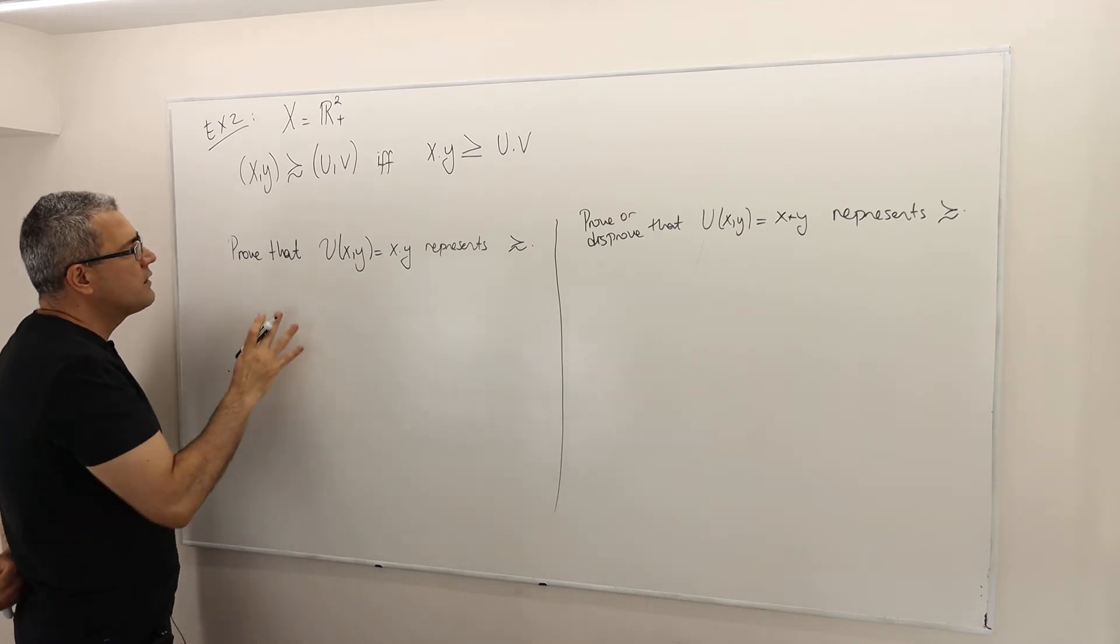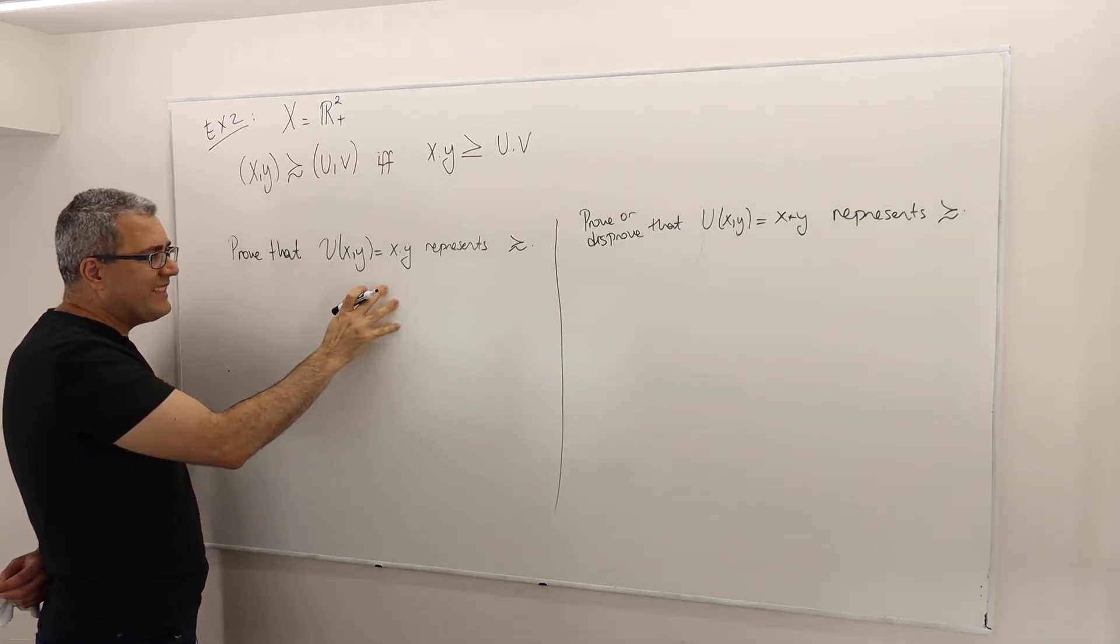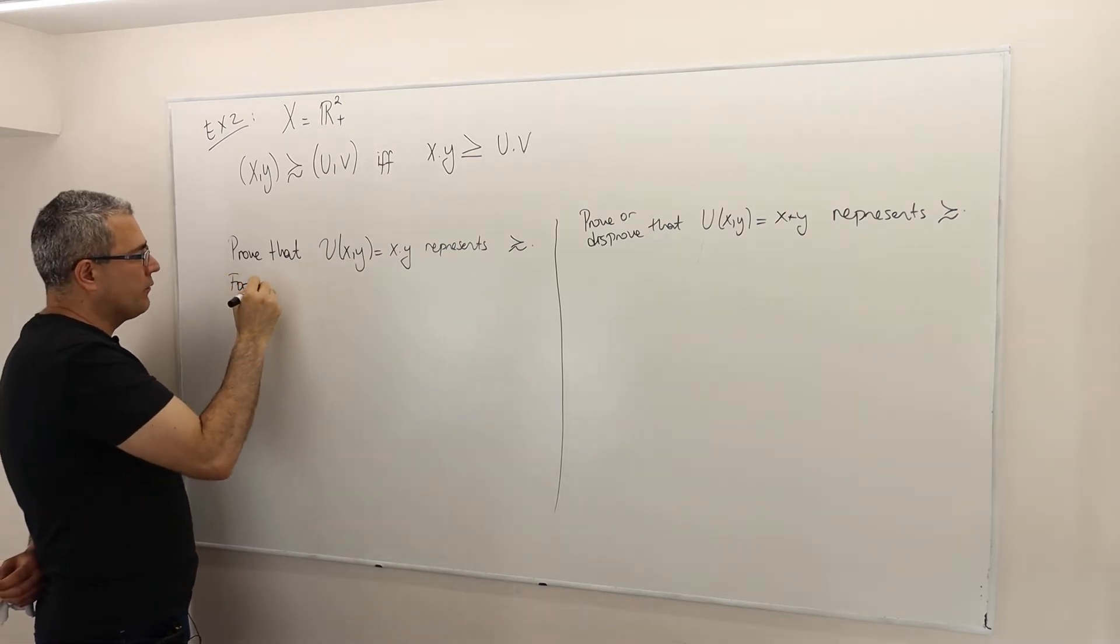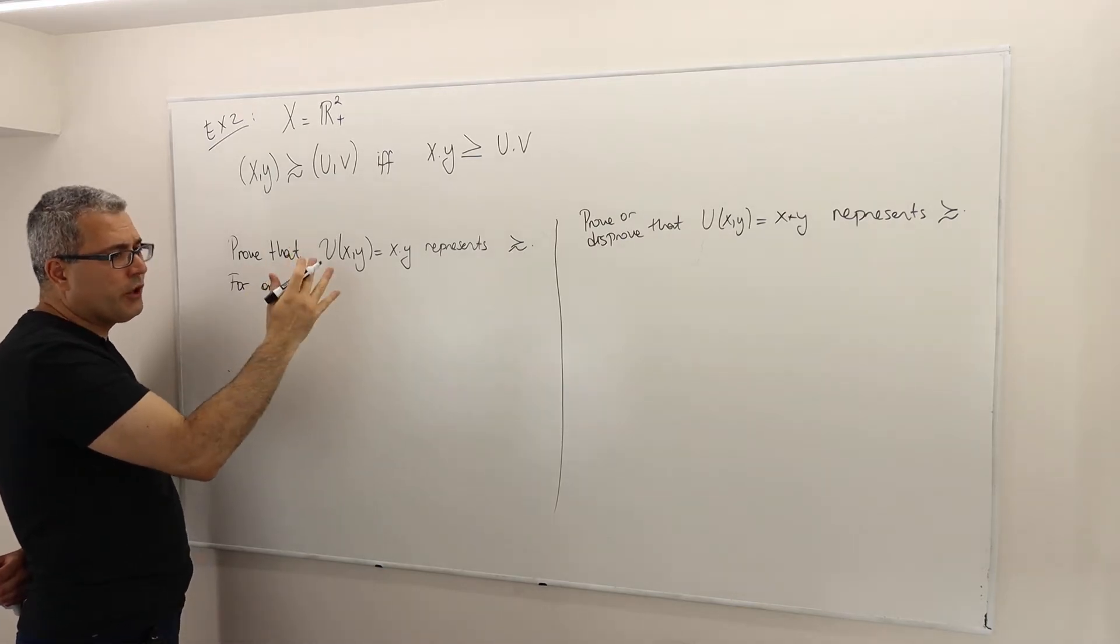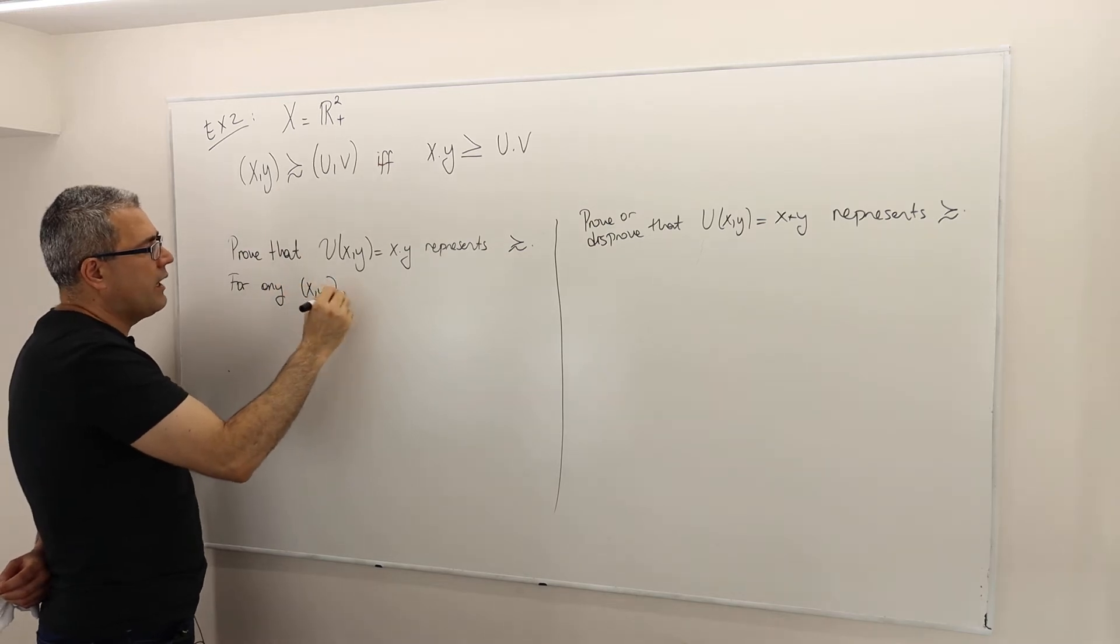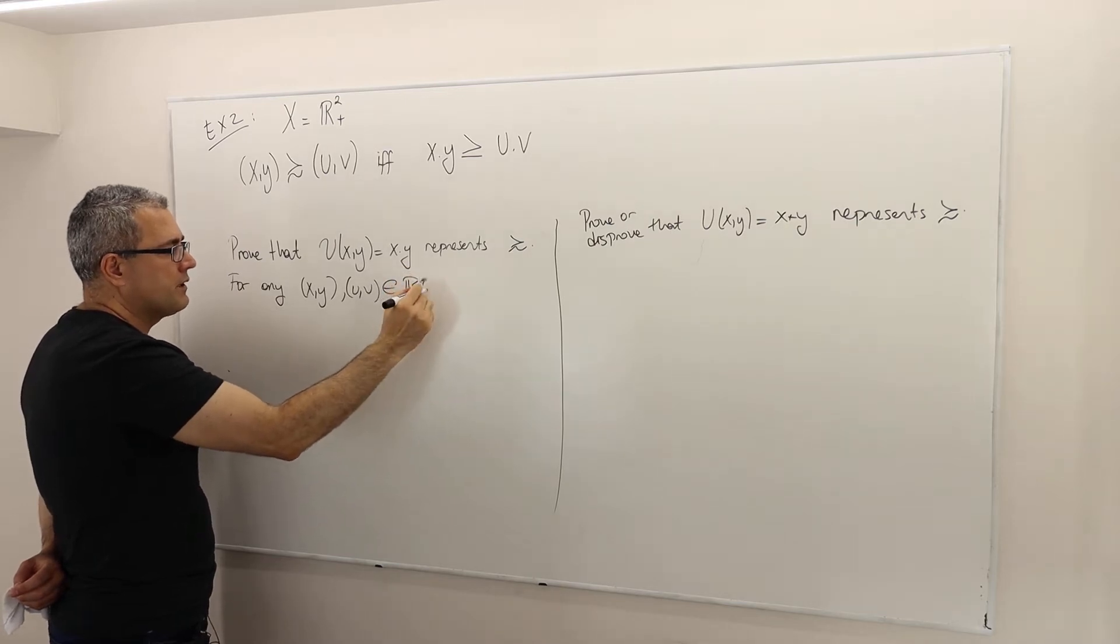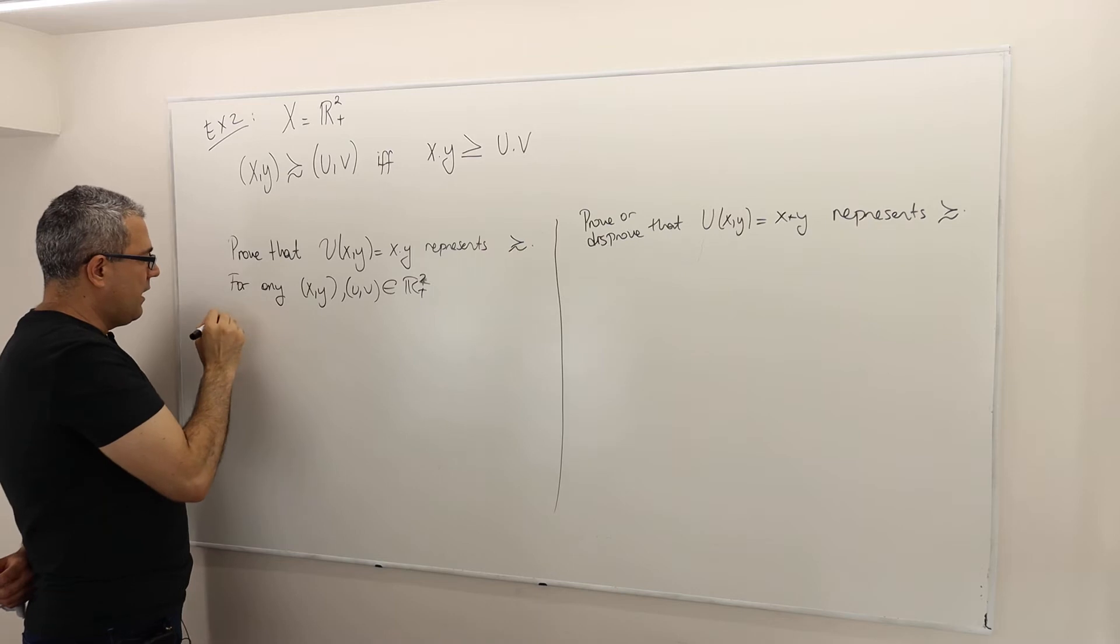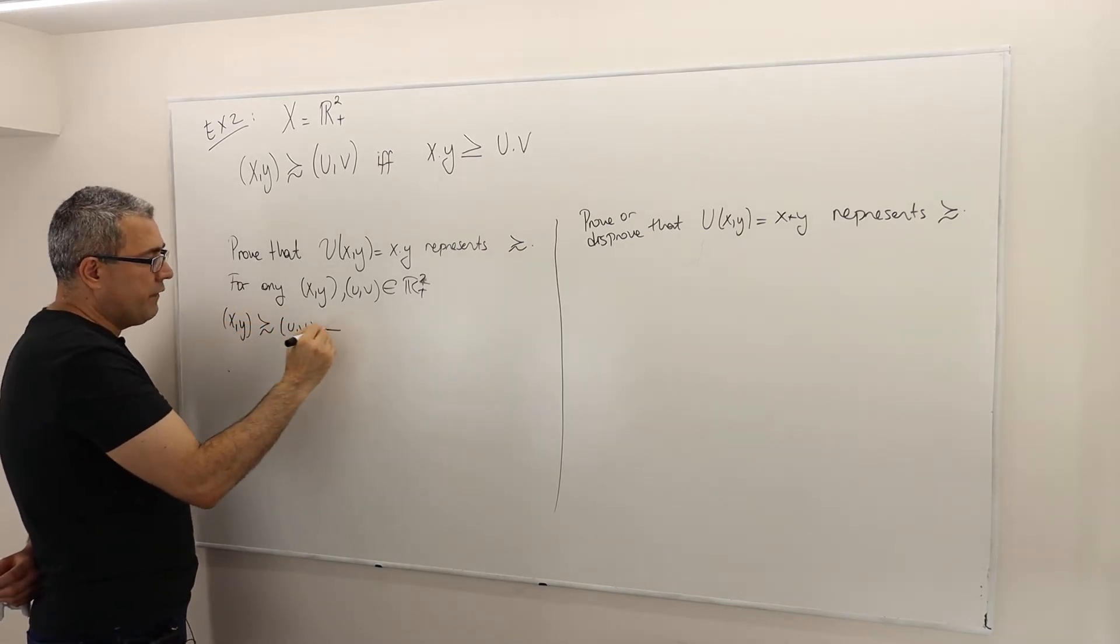What is the definition of utility function representing a binary relation? It means the following: for any two alternatives, here my alternatives are vectors, XY and UV in R plus squared, XY at least as good as UV if and only if U(XY) greater than or equal to U(UV).